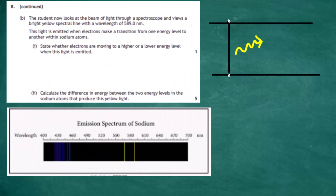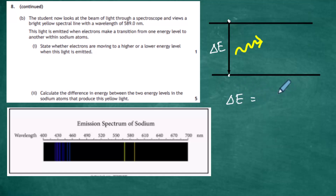Question 8b part 2: calculate the difference in energy between the two energy levels in the sodium atoms that produce this yellow light. We have the energy level diagram and we have to work out the energy difference ΔE. We know that ΔE must equal hf, where h is Planck's constant and f is the frequency of the photon. Since we're only given the wavelength, we have to convert frequency into wavelength in our calculation.